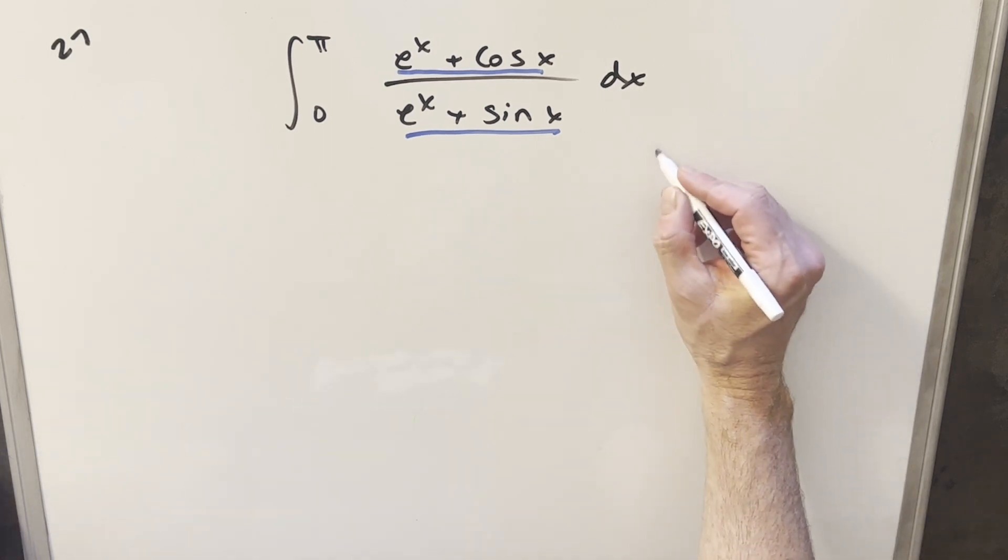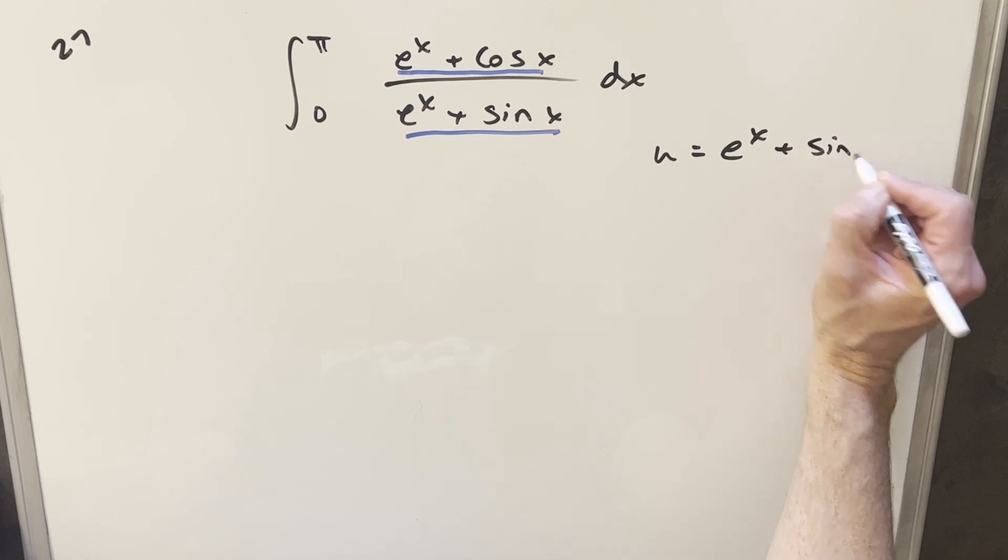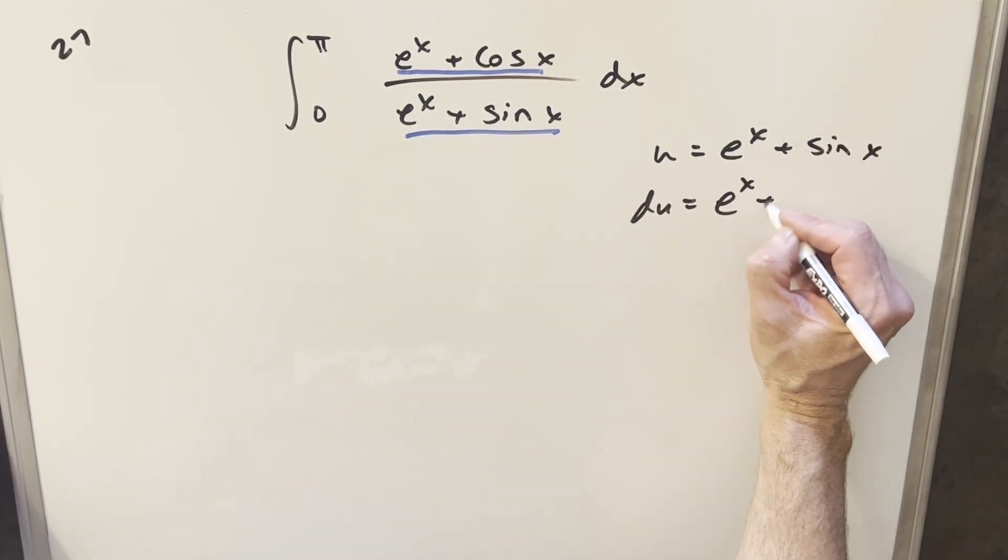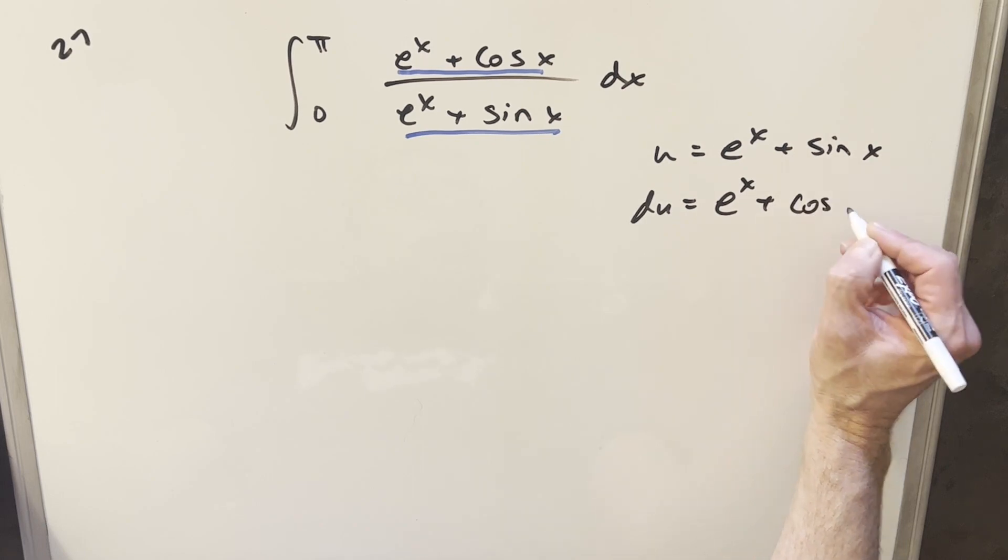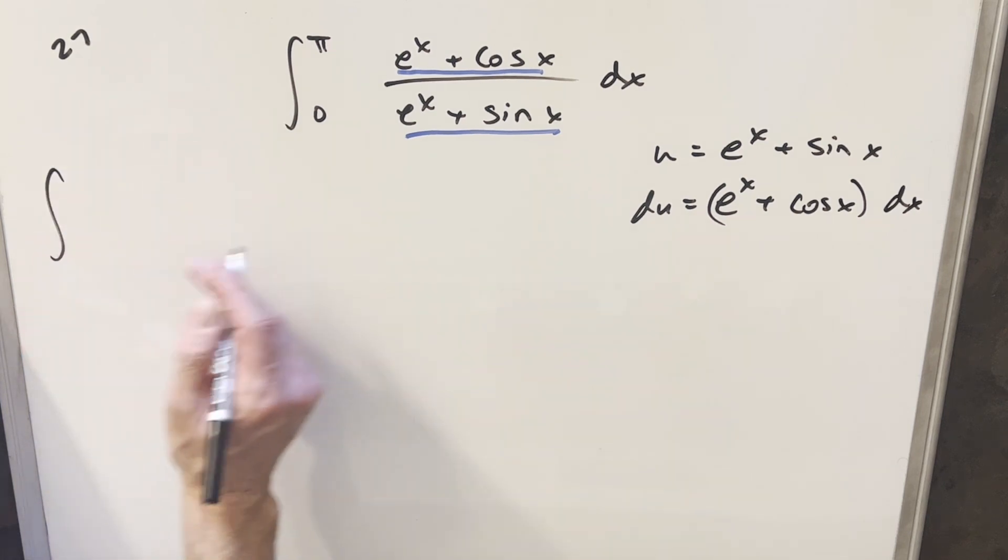What I'm going to do is make the denominator our u, so u = e^x + sin x. Taking the derivative, we get du = (e^x + cos x) dx.